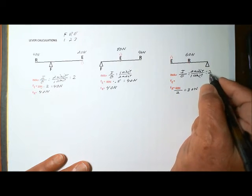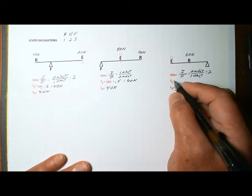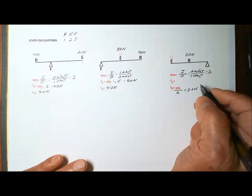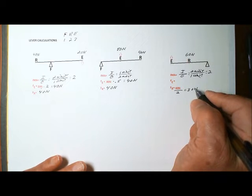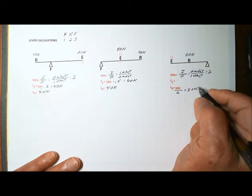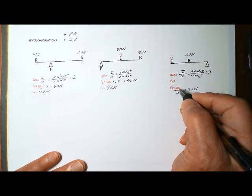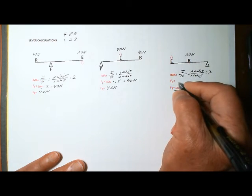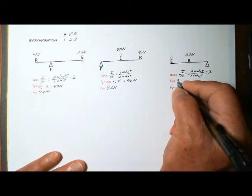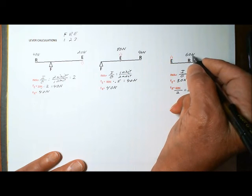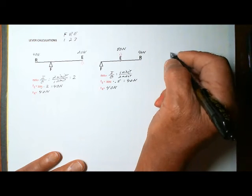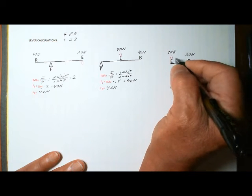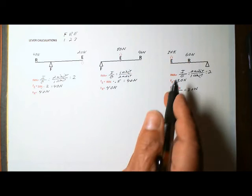Any effort force we put in is multiplied by a factor of two, which means any resistance we want to move is divided by a factor of two. So if we divide 60 newtons by two, we get an effort force of 30 newtons. The ideal mechanical advantage multiplies the effort force or divides the resistance force — they are on opposite sides of the machine and use opposite mathematical functions. We can move a 60 newton resistance with only a 30 newton effort force using this second class lever.